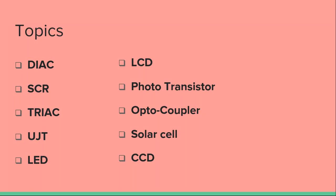Power Devices and Display Devices are: DiAC, SCR, TRIAC, UJT, LED, LCD, Photo Transistor, Optocoupler, Solar Cell, and CCD. LED, LCD, and CCD are Display Devices. Photo Transistor, Optocoupler, DiAC, SCR, TRIAC, and UJT are Power Devices.